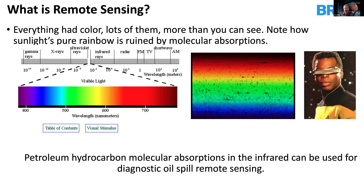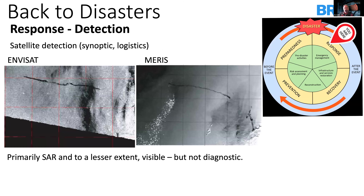Remote sensing uses a broad spectrum of wavelengths of light — with the exception of active systems like SAR — to remotely observe oil on the sea surface, as well as vegetation and other aspects. Within what looks like a beautiful prism and spectrum, there are many molecular absorptions. It turns out that petroleum hydrocarbon has molecular absorptions in the infrared which can be used diagnostically — meaning when you detect them, you know it's petroleum hydrocarbon, not a false positive.